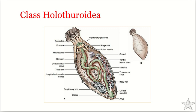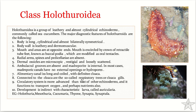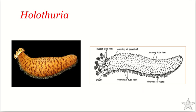When the sea cucumber is resting on a substrate, three of the five rows of tube feet are on the surface closer to the substrate, primarily used for attachment and locomotion — these are the locomotory tube feet. The other two rows of tube feet on the upper surface are rarely used or may be absent, forming sensory tube feet.